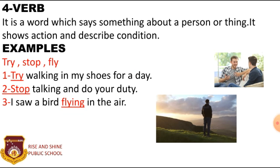Dear students, a verb may tell us what a person or thing does — for example, 'Ali plays.' A verb may tell us what is done to a person or thing — for example, 'The window is broken.' A verb may also tell us what a person or thing is — for example, 'The cat is dead. I feel sorry.'